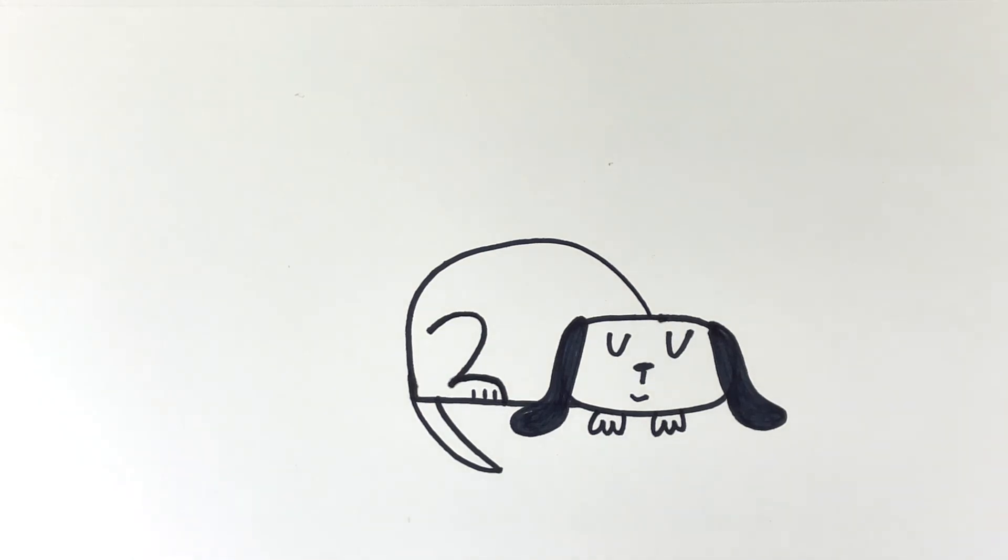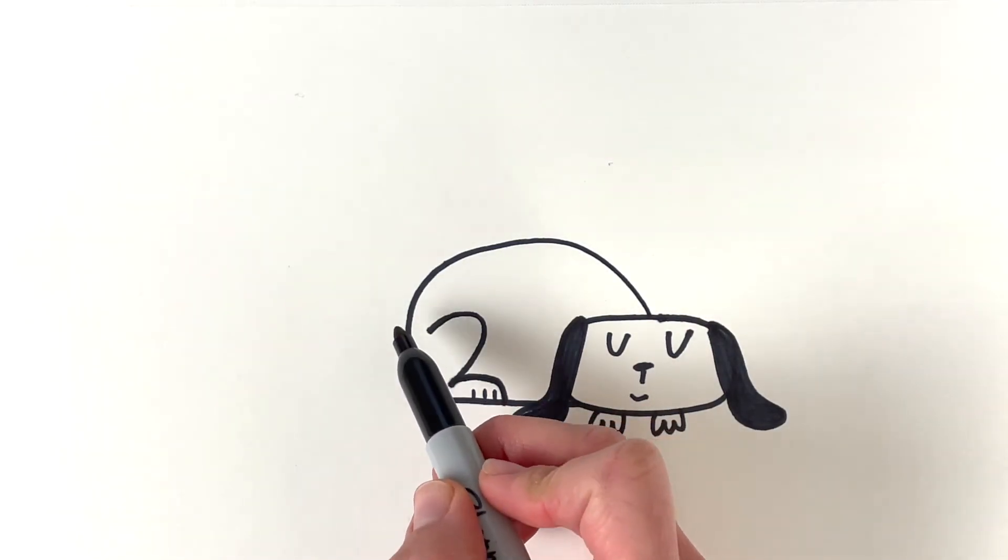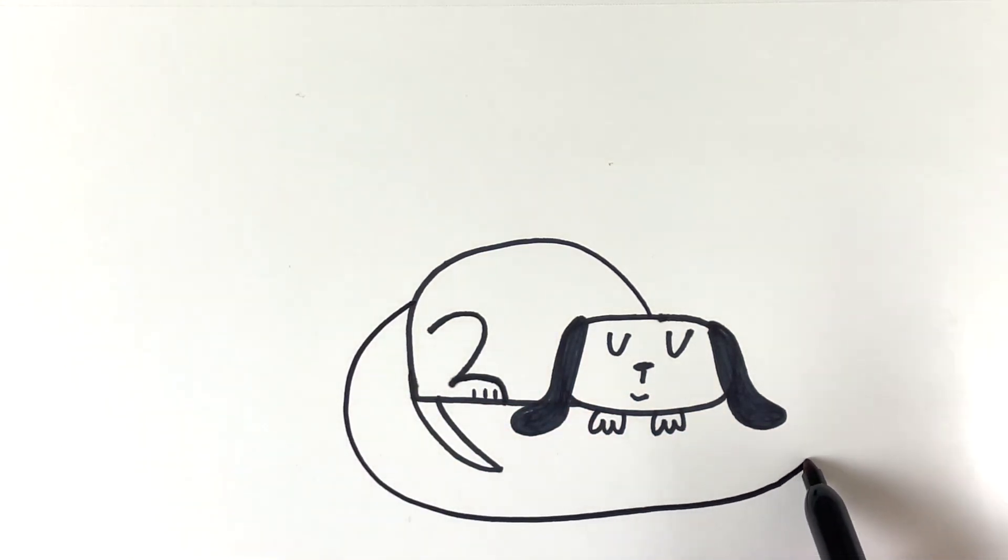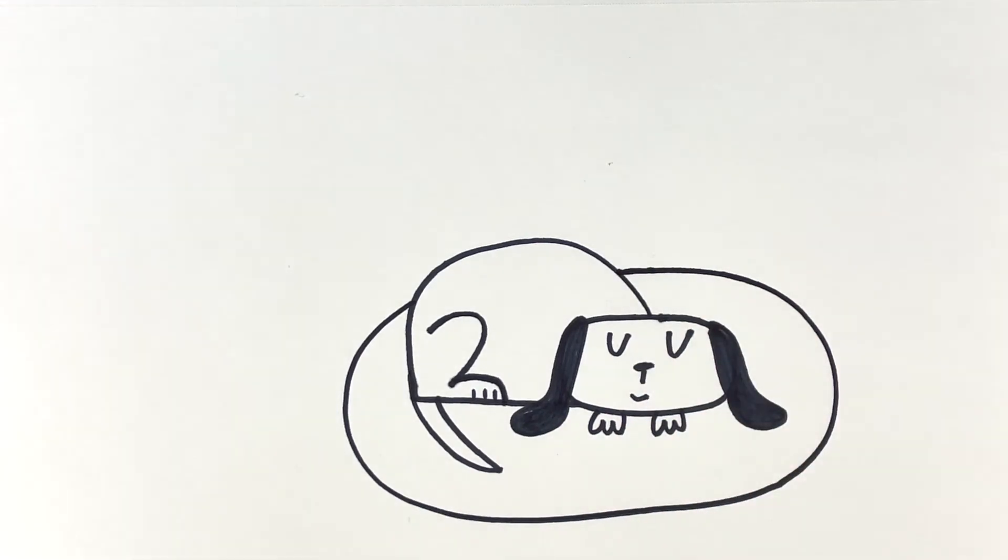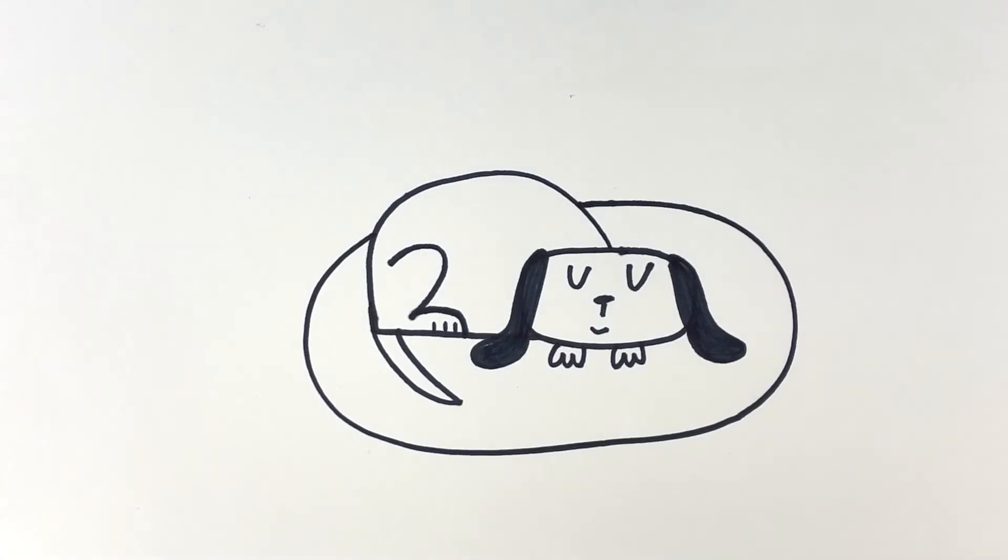And I think I want to give this pup a bed to sleep in. So I'm going to start kind of right around his butt. And connect back like that. But it kind of looks like he's sleeping on a mat. It doesn't really look like a bed. So let's add a little bit of dimension to the bed.